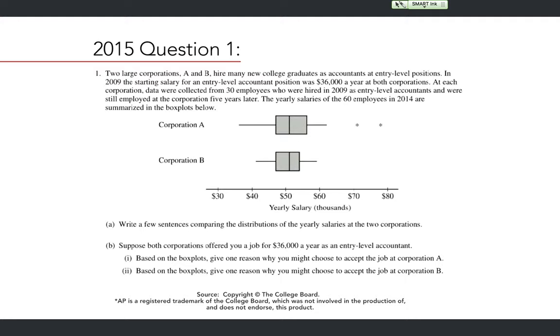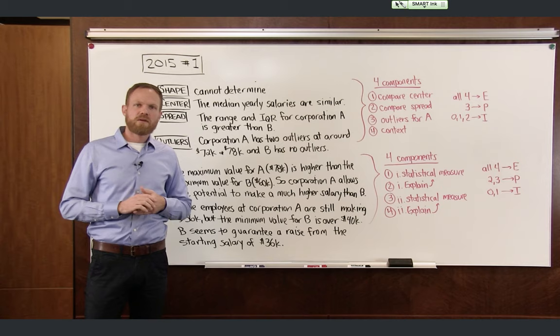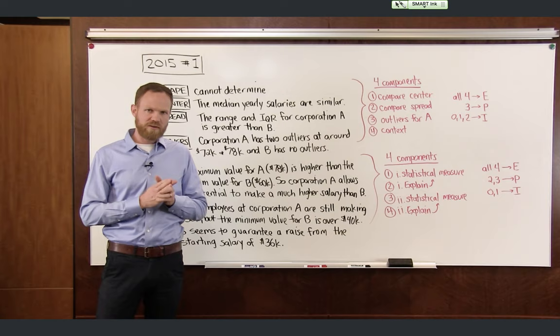Part A: write a few sentences comparing the distributions of the yearly salaries at the two corporations. Part B: suppose both corporations offered you a job for $36,000 a year as an entry-level accountant. Part I: based on the box plots, give one reason why you might choose to accept the job at corporation A. Part II: give one reason why you might choose to accept the job at corporation B.